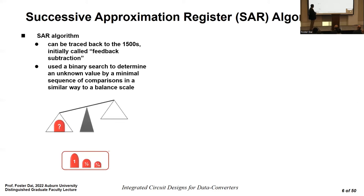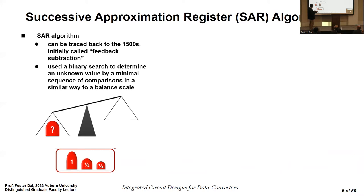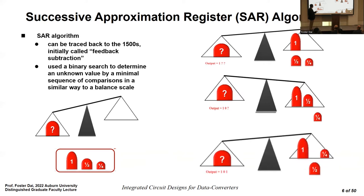The successive approximation register algorithm can be traced back to the 16th century. It uses a binary search to determine an unknown value with a minimal sequence of comparisons. For example, with an unknown weight in the range zero to two, quantized in three steps: in the first step, compare with half the full scale — which is one — and if the unknown weight is heavier, the first bit is one.